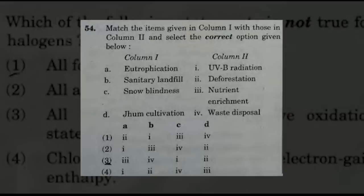The next question is a match-the-following item with column 1 and column 2. You have to match the correct answer. The suggested answers are options 3 and 4 — that is, option 3 matches: 3, 4, 1, and 2; and option 4 matches: 1, 2, 4, and 3.